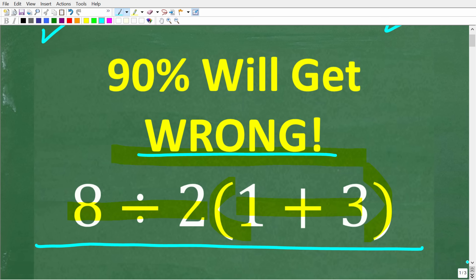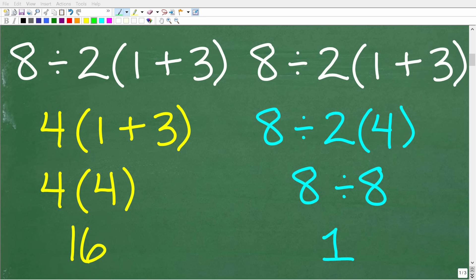So once more, here is the problem: 8 divided by 2 parentheses 1 plus 3. What is the answer? So let's take a look at two ways to do this problem. Now one of these ways is right and one is wrong. But there is even an additional twist. I'll hold off on telling you what that is, but just take a quick second and take a look at this work. Because if you really understand basic math, you should be able to quickly identify the wrong answer.